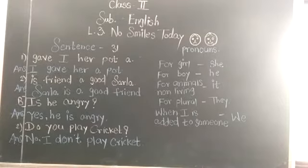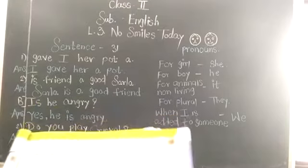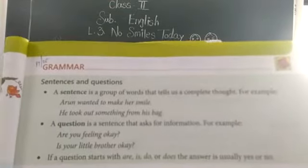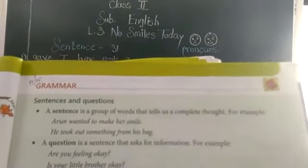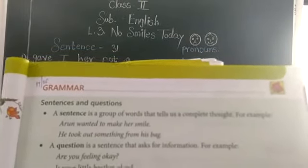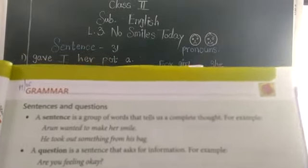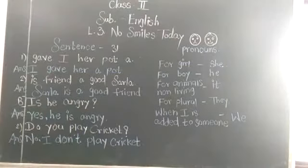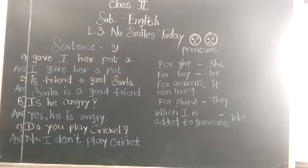Here it is sentences and questions. I am going to read from the book and then I will explain to you. A sentence is a group of words that tells us a complete thought. For example, Arun wanted to make her smile. He took out something from his bag. This is a sentence. How can you say that this is a sentence? Because it gives us a complete meaning, a complete sense. You can understand something correct.